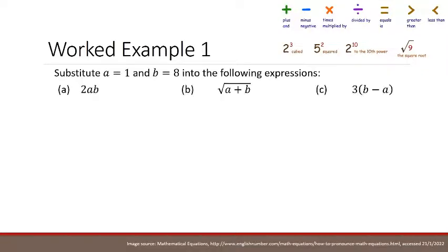The first example is to substitute a=1 and b=8 into the following expressions. The first one is 2ab. Now, one mistake that students sometimes make is by just simply replacing the a with a 1 and b with an 8 to get 218. That's incorrect. We need to remember in algebra that when two pronumerals, or a number and a pronumeral, are next to each other, it means multiplication. So 2ab equals 2×a×b. Then we substitute 2×1×8, replacing the a for the 1 and the b for the 8, and multiplying that out is 16.